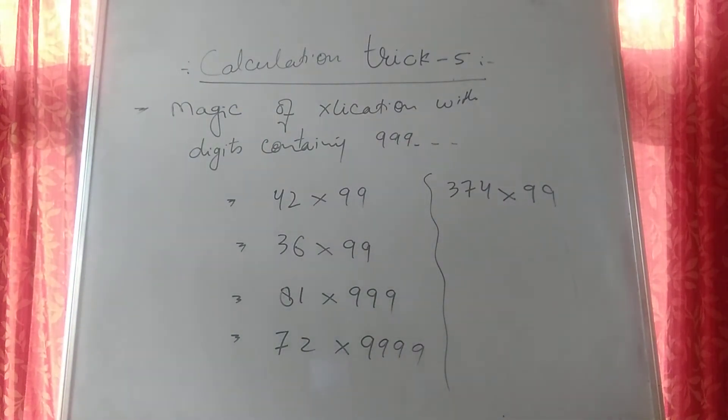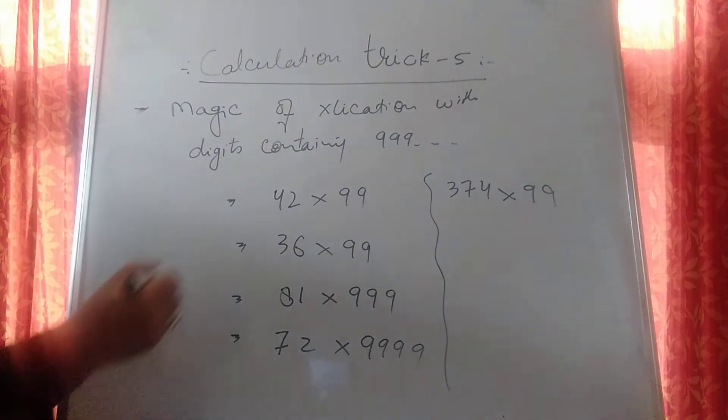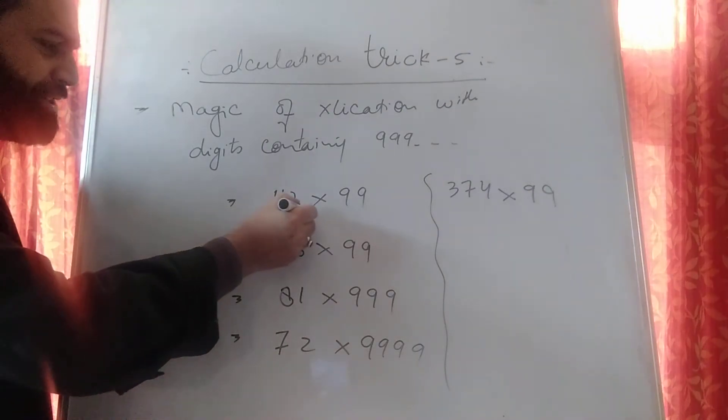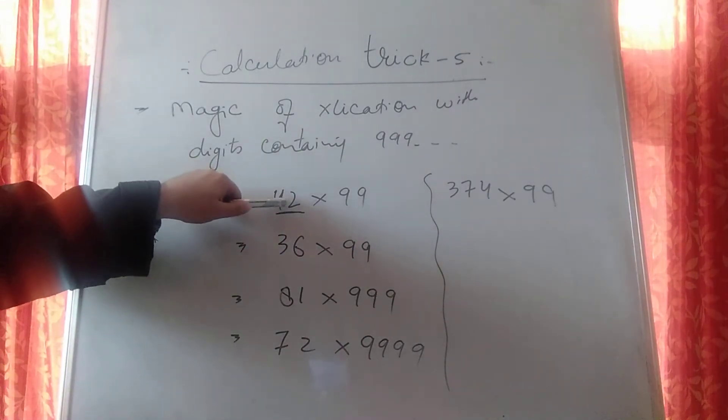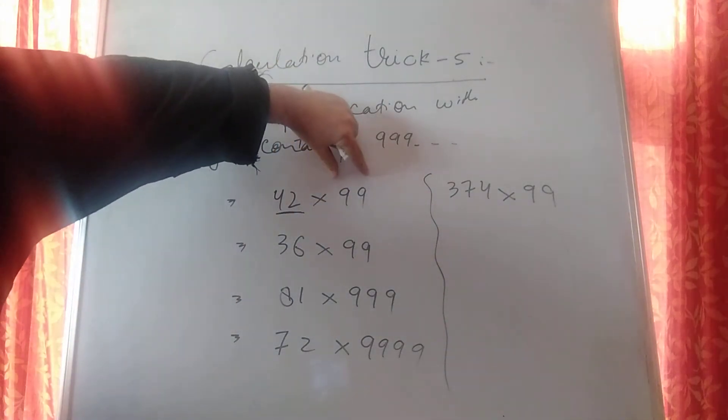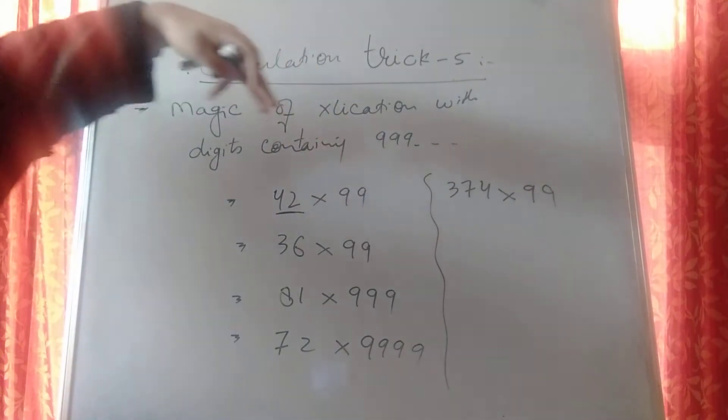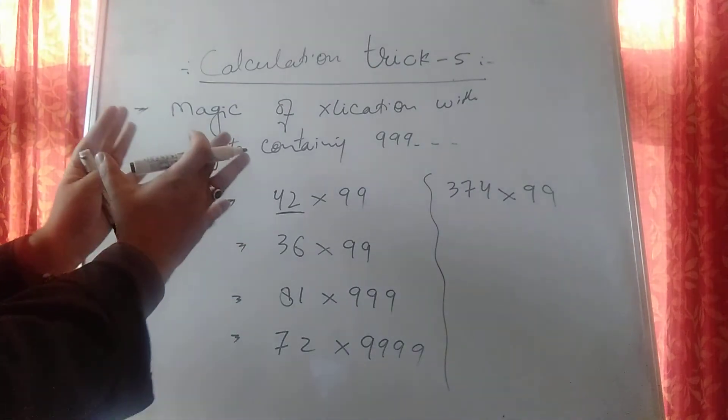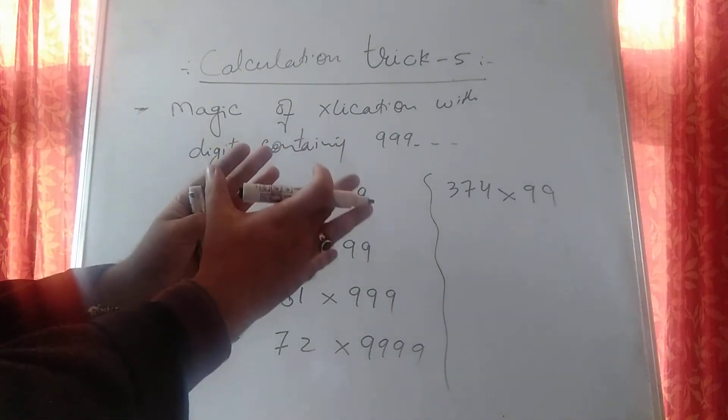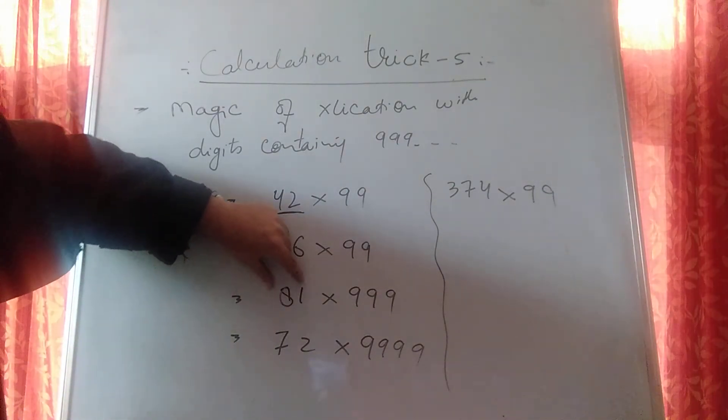In this very trick we have to take 3 things into consideration. The number which you need to multiply contains the same number of digits as there are the number of 9's. If there are 2 9's, 2 digits. 2 9's, 2 digits. Or 3 9's, 3 digits. It's one case. Number of digits is equal to the number of 9's present. Number of digits here are less than the number of 9's.